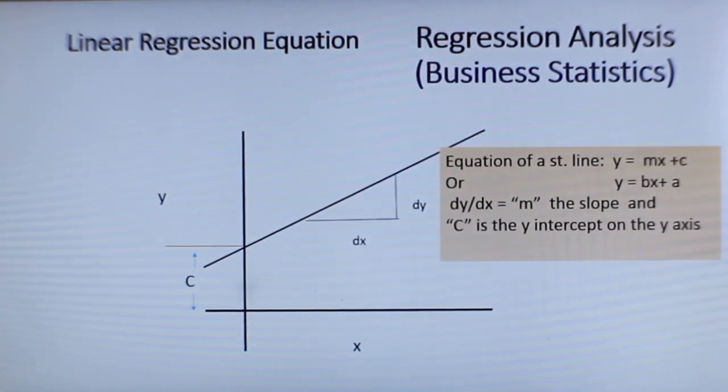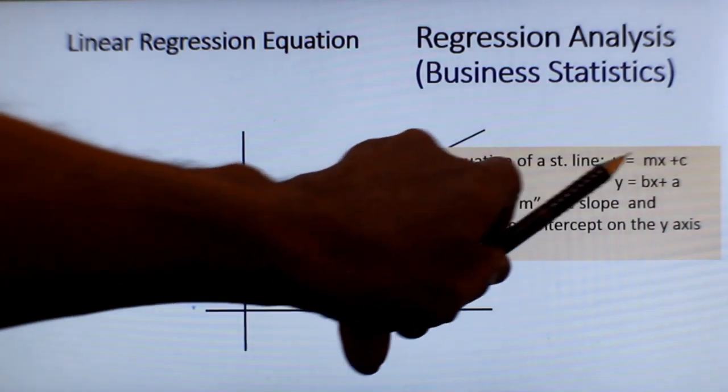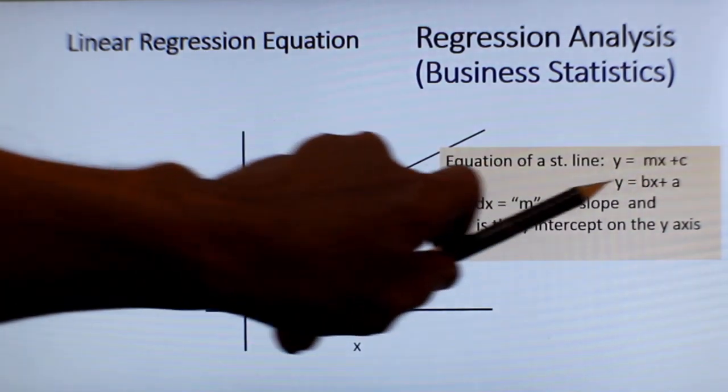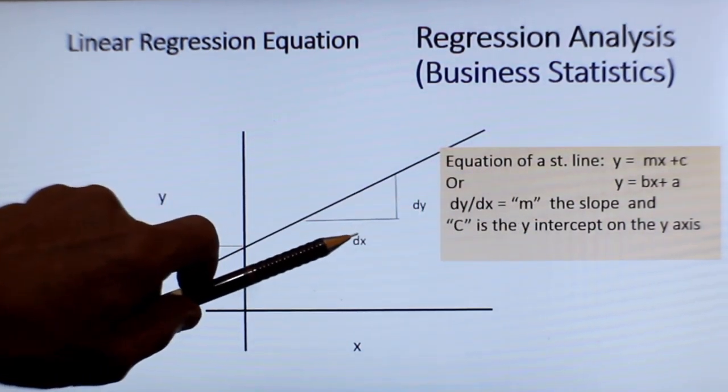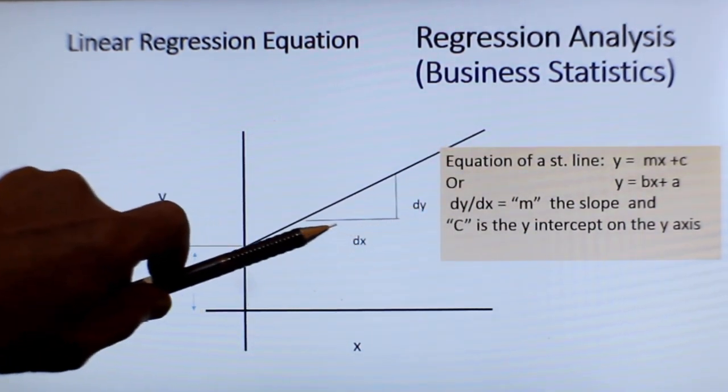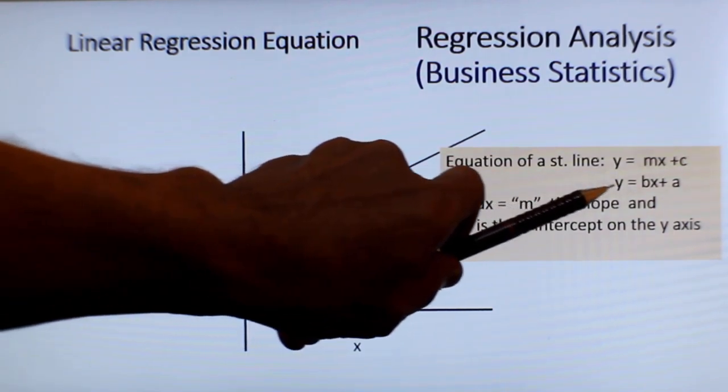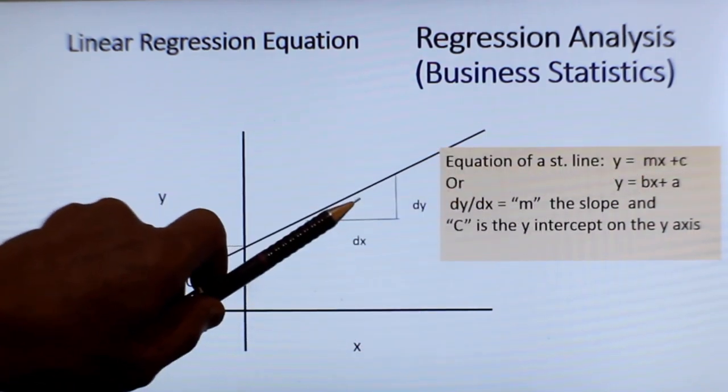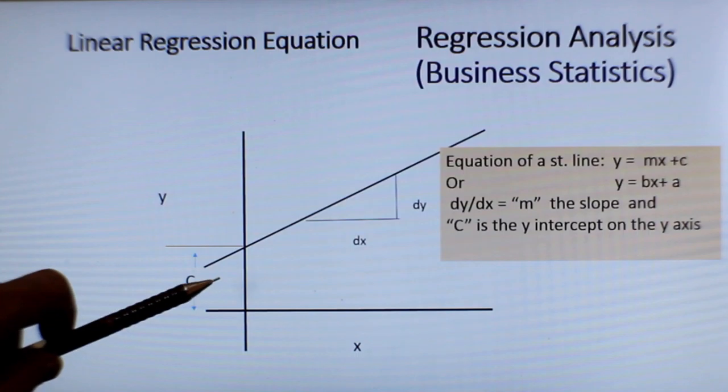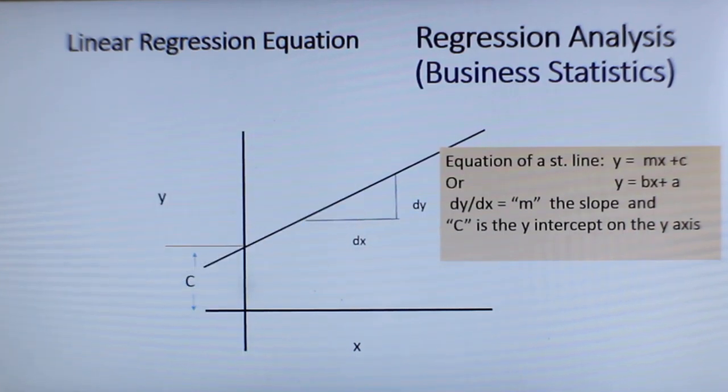Now, in this slide, you see a simple linear equation y equals mx plus c. You may all recollect you have learned in analytical geometry y equals mx plus c, where c is the y-intercept and m is the slope which is dy by dx. What it means is that y varies as x varies, and that is contributed by the slope and also a y-intercept. This is the equation of a straight line which you have studied in linear regression.